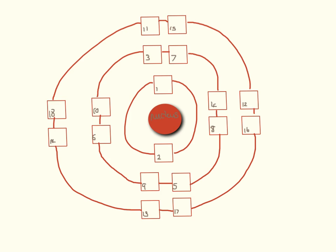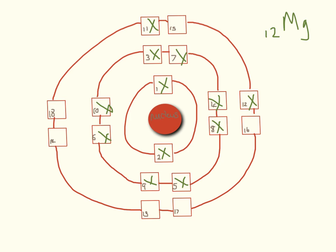Next up we're going to look at magnesium. Magnesium's atomic number is 12, so it has 12 electrons. I'm just going to go through putting crosses in the boxes until I get to 12. Again, this looks a bit messy, so for a GCSE exam they're probably going to want something nice and neat.